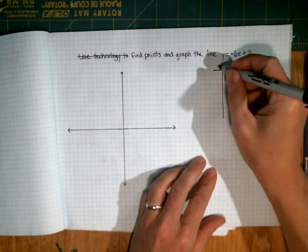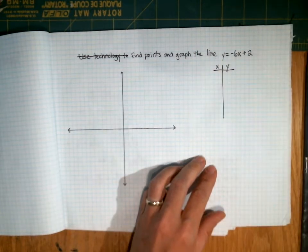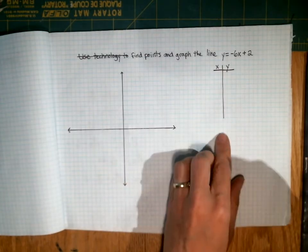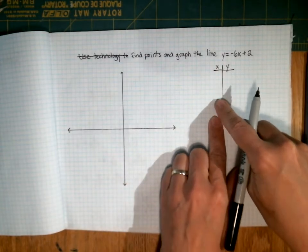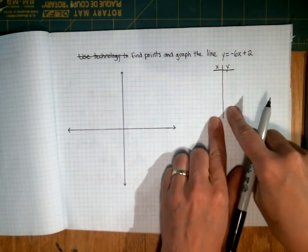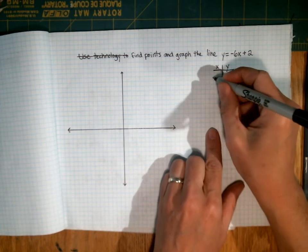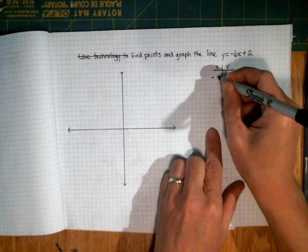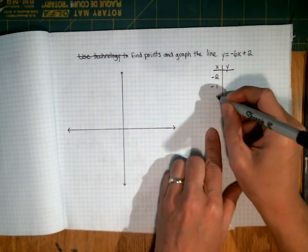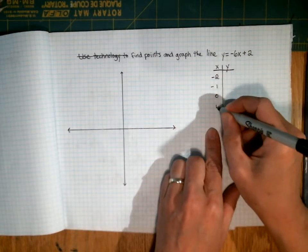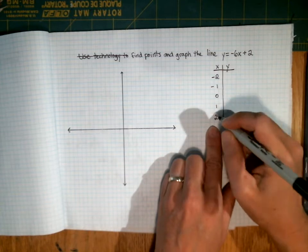The way to do this is first to make a table for x and y values. You're going to pick x values, and then figure out what the corresponding y values are given your equation. The x values you should pick are the easiest ones to use: negative 2, negative 1, 0, 1, and 2.